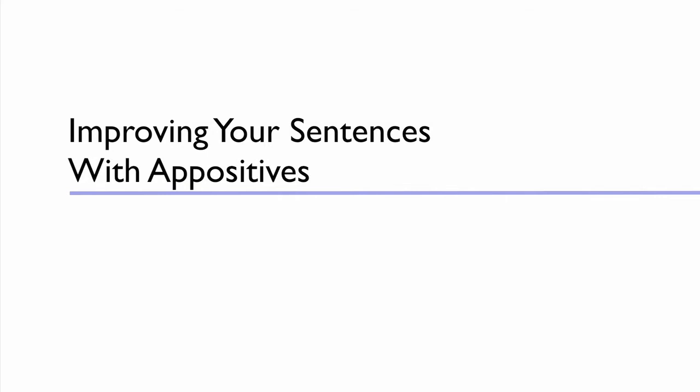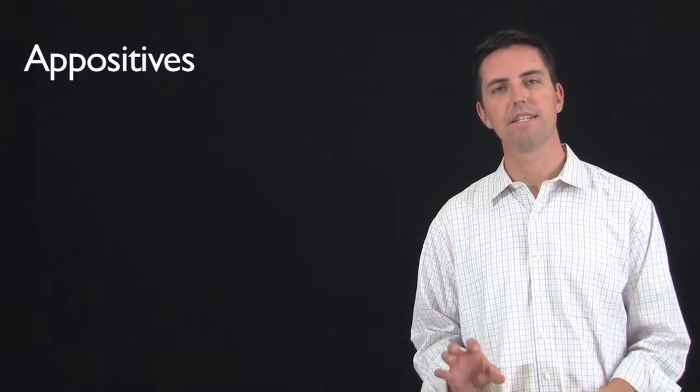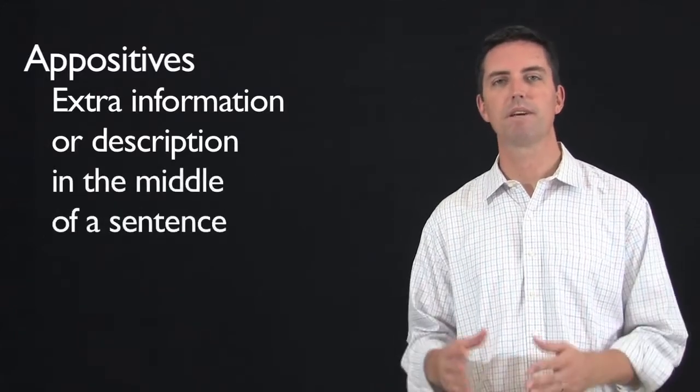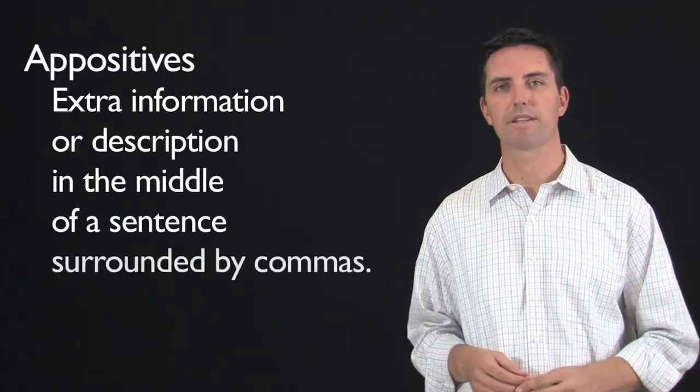The next way to strengthen a short, simple sentence is to add an appositive. An appositive is a little bit of extra information or a little extra description that you put in the middle of the sentence and surround it with commas.